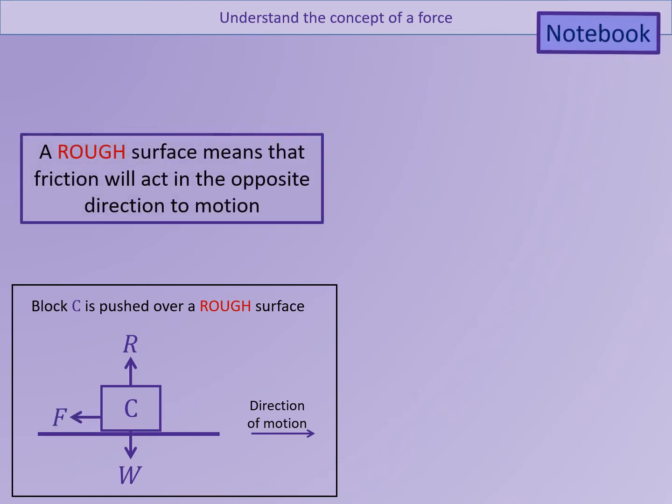Rough is the mathematical word to tell us that there is friction acting between the two surfaces. Friction always opposes the direction of motion. So if object C is moving to the right, the friction force will be acting to the left.